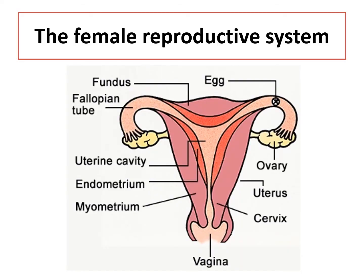Firstly we will have a look at the female reproductive system, starting with the ovaries. There are two ovaries, highlighted in yellow, and they are located within the pelvic cavity of the female, held in place by ligaments highlighted in blue. The ovaries are responsible for the production of an egg cell, which is called oogenesis, and as a secondary function they also produce the hormones progesterone and estrogen.